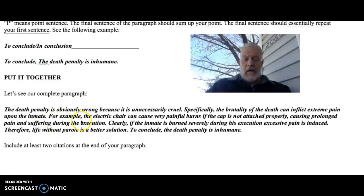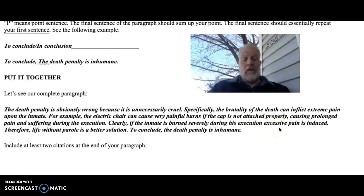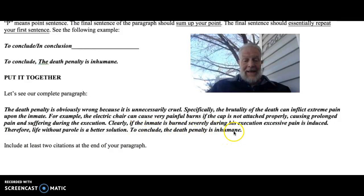Let's put it together. The death penalty is obviously wrong because it is unnecessarily cruel. Specifically, the brutality of the death can inflict extreme pain upon the inmate. For example, the electric chair can cause very painful burns if the cap is not attached properly, causing prolonged pain and suffering during the execution. Then, finally, your transition word, clearly. If the inmate is burned severely during his execution, excessive pain is induced. Your last transition statement is therefore, life without parole is a better solution. To conclude, the death penalty is inhumane. Do you see how that last sentence summarizes your first sentence?